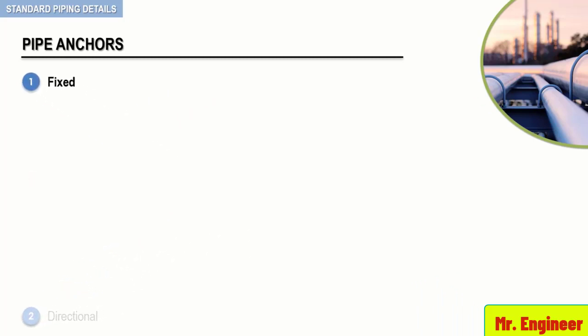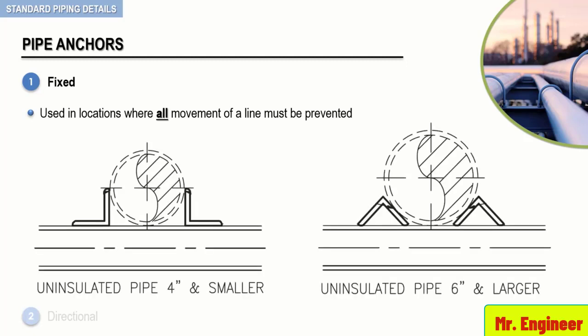Fixed anchors are used in locations where all movement of a line must be prevented. The following figure depicts typical examples of fixed pipe anchors according to the pipe size. Notice here that the way the pipe is anchored is by welding the pipe directly to the support.